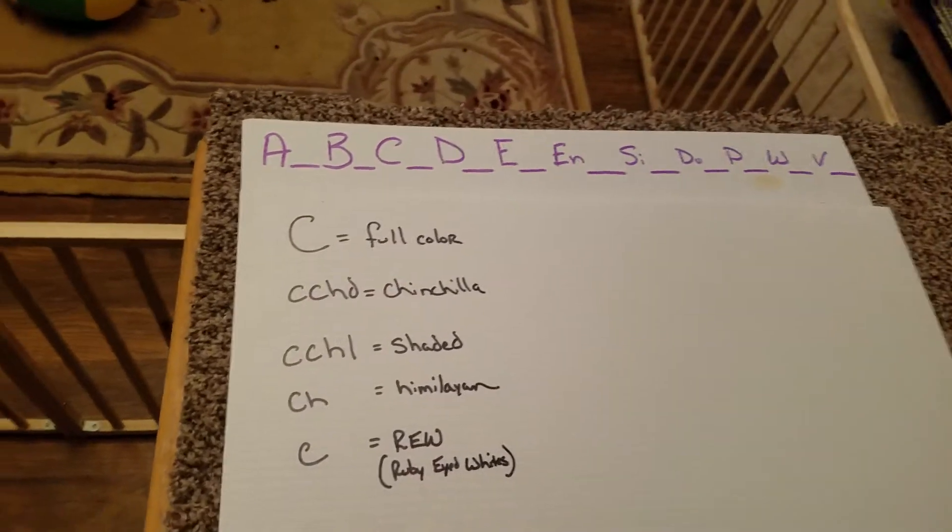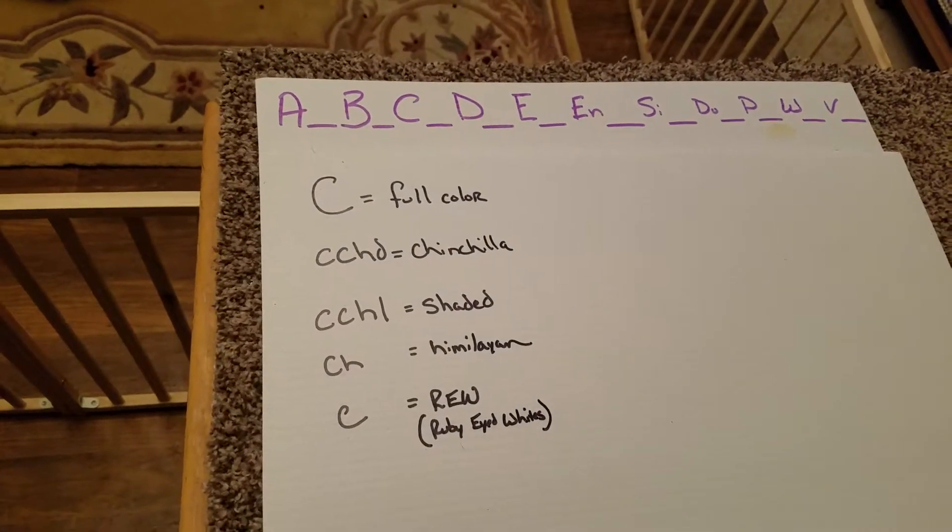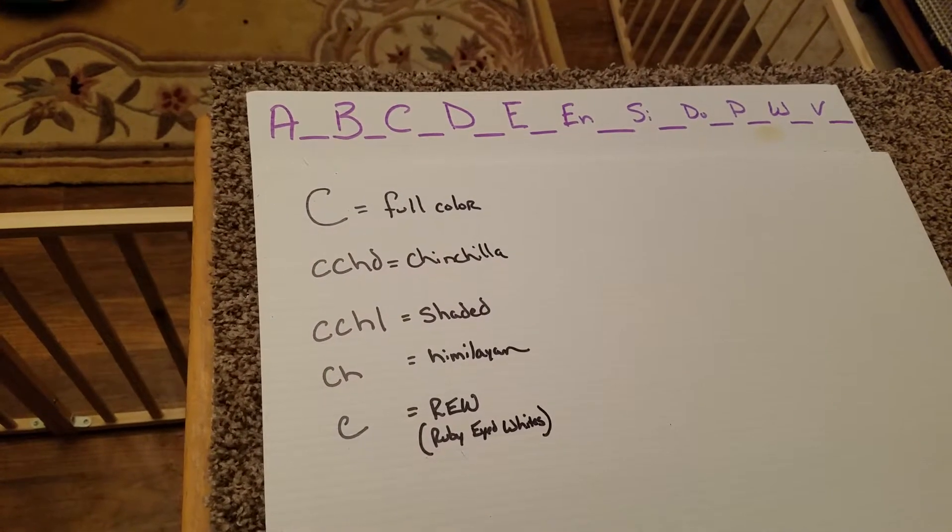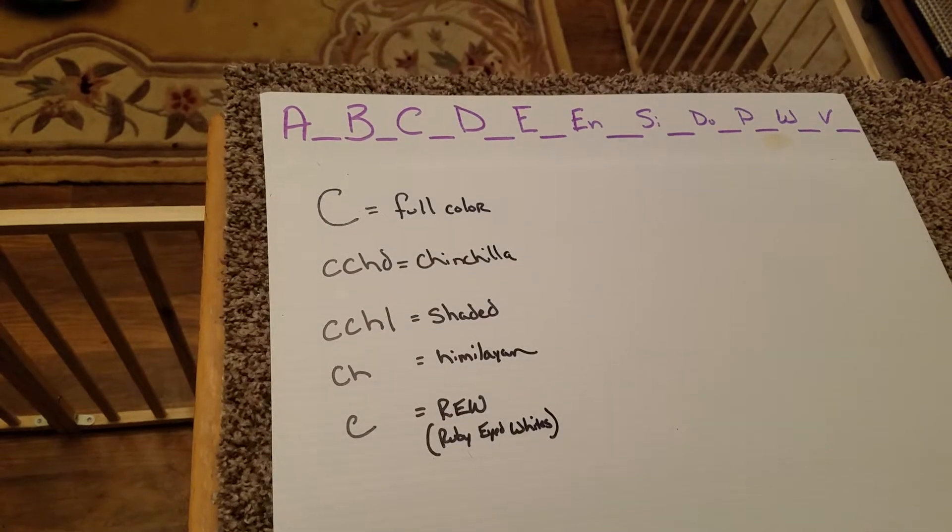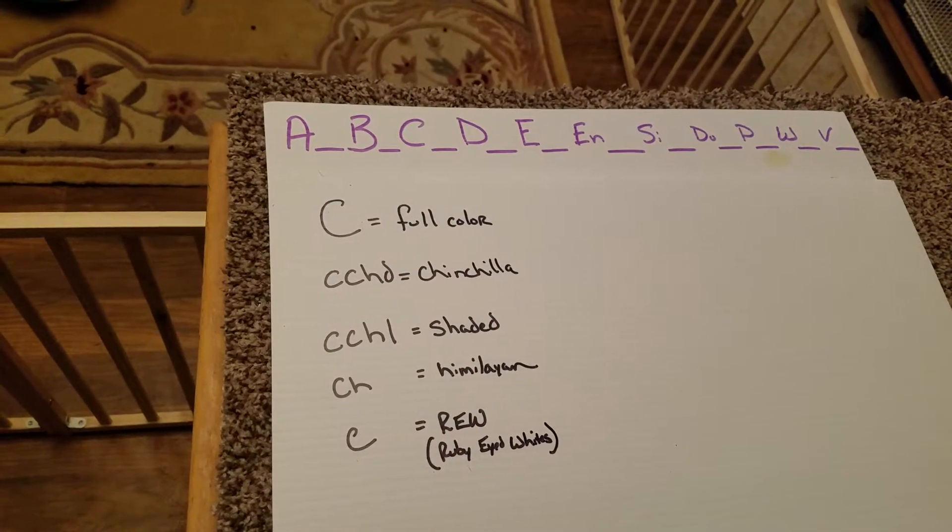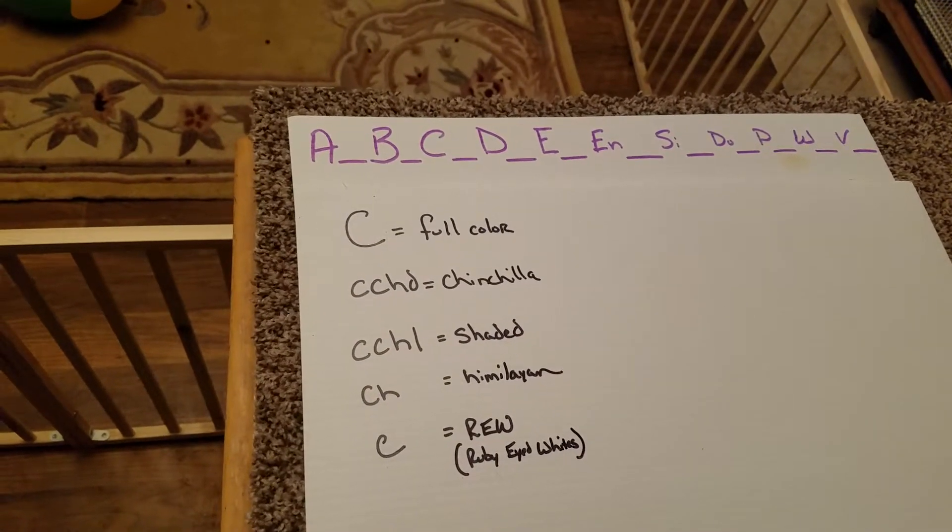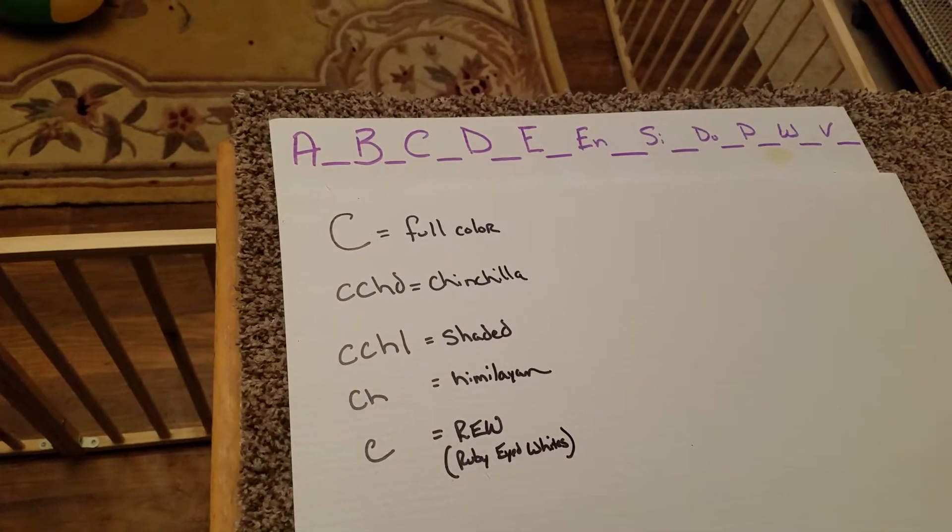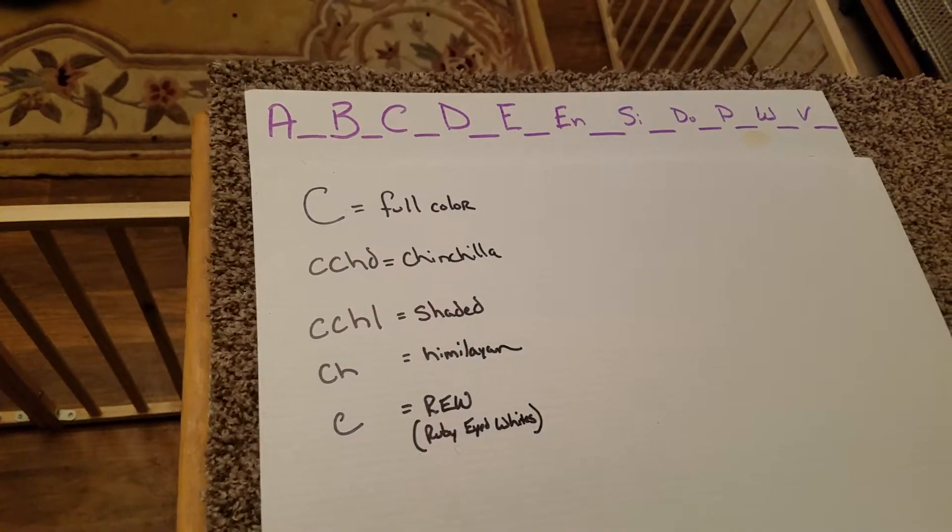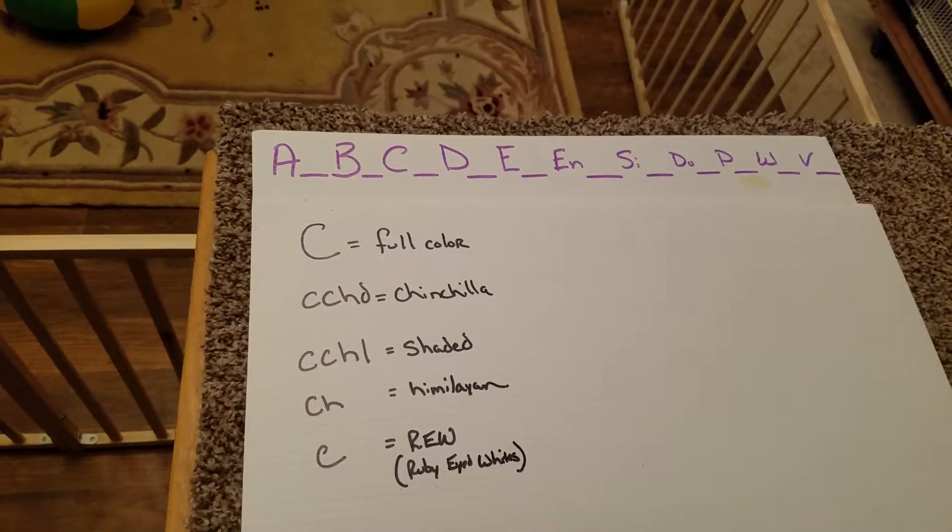Next up we have what we call the Himalayan gene. It is responsible for your pointed blacks, your pointed blues. What it does is it pushes all the color to the points of the rabbit. So you're generally going to see a little bit of black on the face, ears, and then black feet. The rest of the rabbit will remain white in color. We're just taking all that color on the rabbit and moving it to the points, hence the name pointed black.